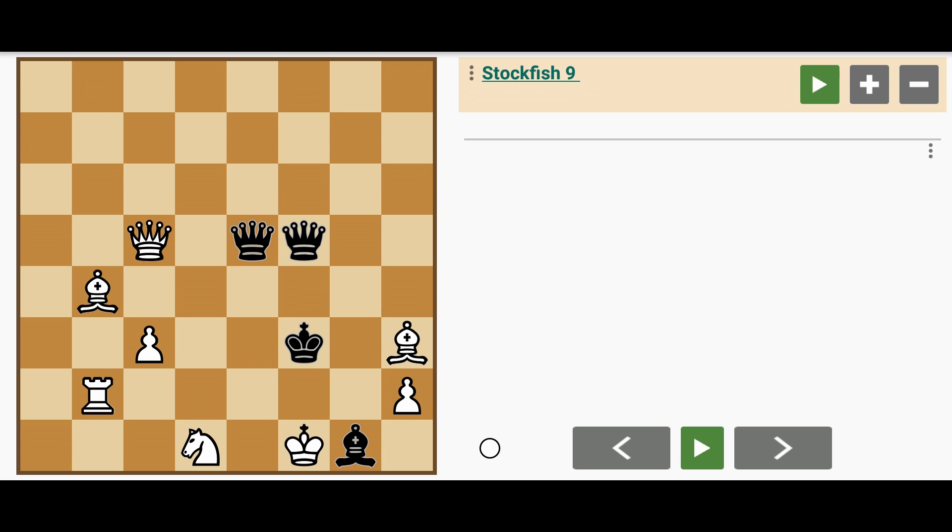So the queen is 9. The three minor pieces are another 9, that's 18. The rook is 5, that's 23. And 2 pawns actually, which makes it 25.